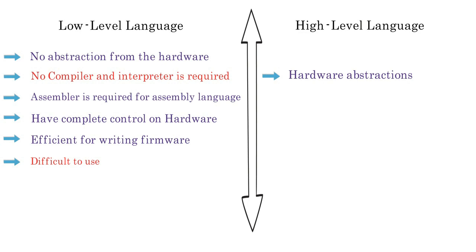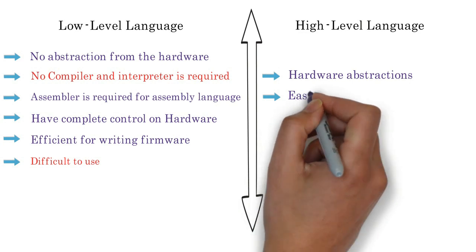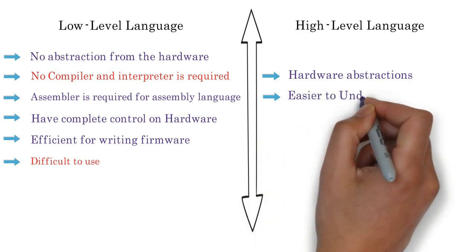They are closer to human language, such as English, and further away from machine language. In high-level programming languages like Python, C, or C++, development of software is much easier.